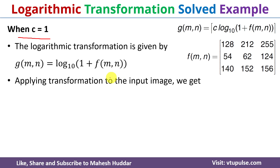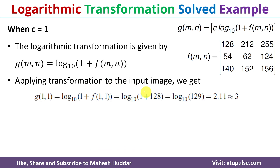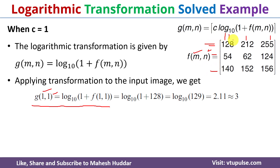Now we will apply the transformation to the input image. We will get g which is equal to log to the base 10. Here m will become 1 and n will become 1 — m represents the row and n represents the column. Position (1,1) means first row first column, which has value 128. Once you replace f with 128 it will become log of 1 plus 128 to the base 10, which is equal to log of 129 to the base 10, which is equal to 2.11, rounded up to 3.